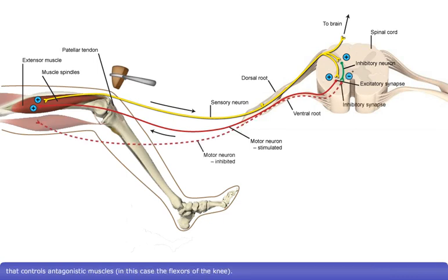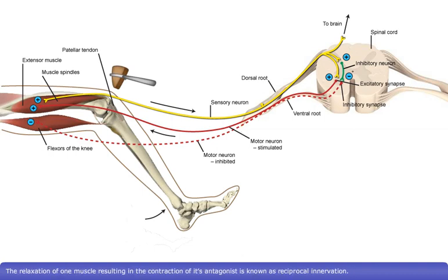The sensory neuron also synapses with an inhibitory interneuron, which in turn synapses ipsilaterally with a motor neuron that controls antagonistic muscles — in this case the flexors of the knee. This leads to relaxation of these muscles, which causes the simultaneous contraction of the stretched muscles. The relaxation of one muscle resulting in the contraction of its antagonist is known as reciprocal innervation.